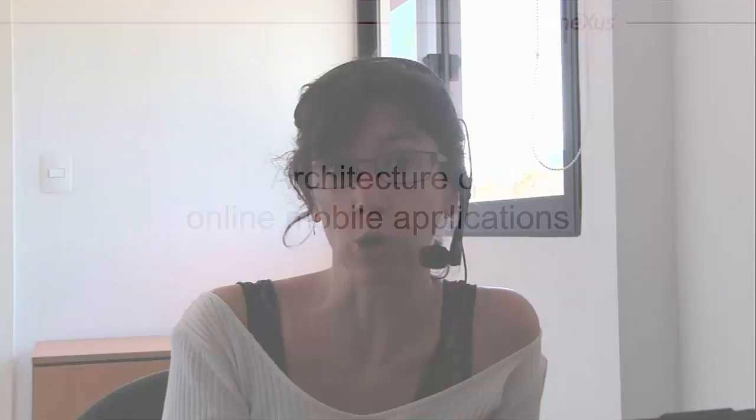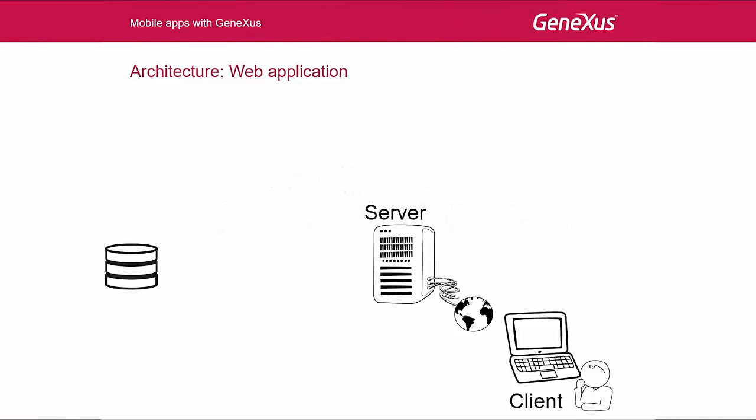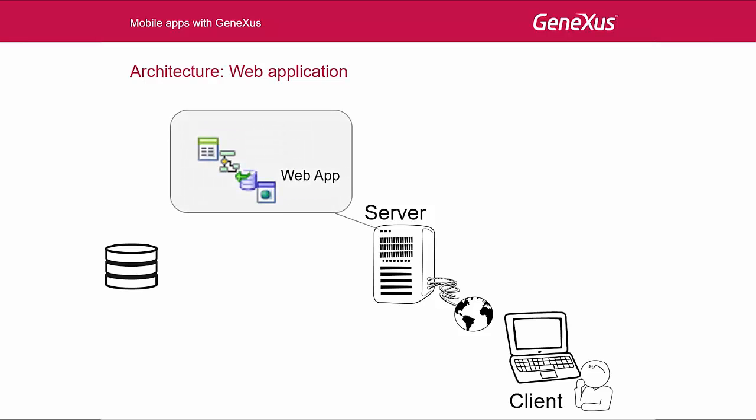Now we will focus on the architecture of online applications, and leave offline applications for the end of the course. To examine the underlying architecture and solutions for smart devices with GeneXus, let's start with what we know: web applications. On one hand we have a server, on the other we have a client. In the server, we have the web application and in the client we have a browser.